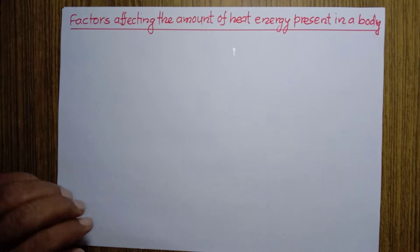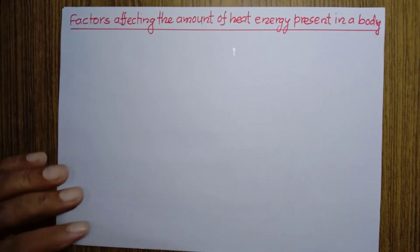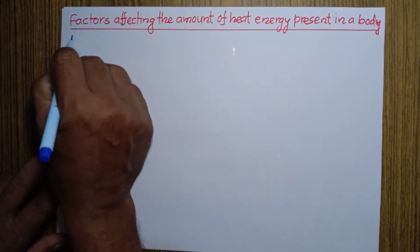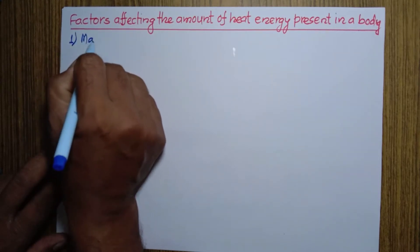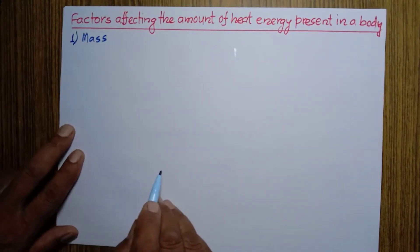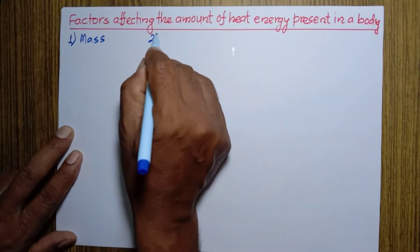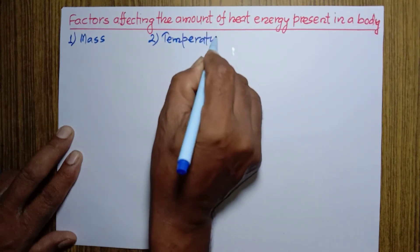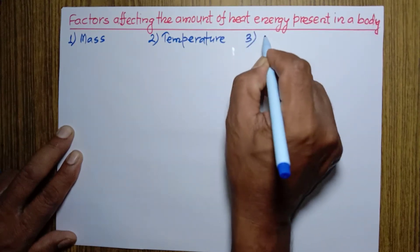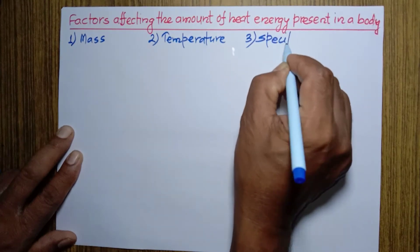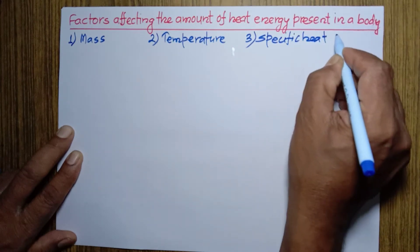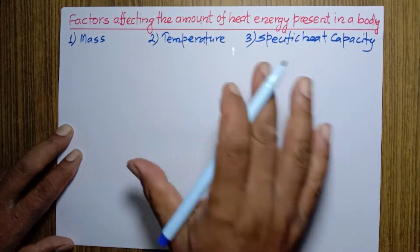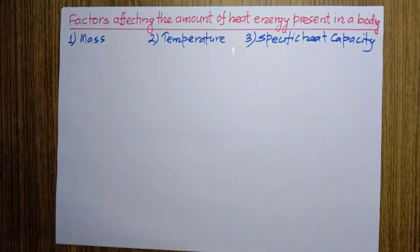Let's talk about the factors which affect the amount of heat energy present in a body. The first one is mass. Mass of the body affects the amount of heat energy present in that body. Number two is temperature. And number three is specific heat capacity. These three are the factors which affect the amount of heat present in the body.